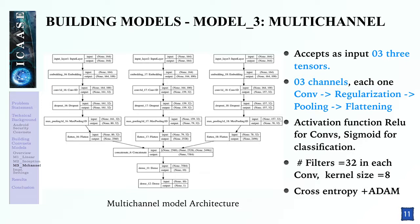The third model is the multi-channel model. The difference between the inception-based model and the multi-channel model is that the latter accepts three tensors that undergo three different channels, each of which is composed of a convolutional layer followed by a subsampling and then a flattening layer. We used 32 filters and a kernel size of 8 in each layer, with binary cross-entropy as the loss function and Adam as the optimization algorithm.